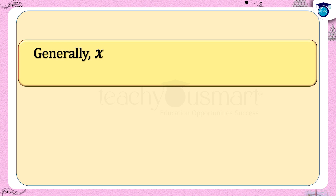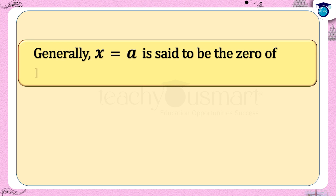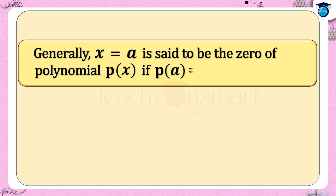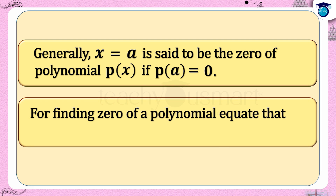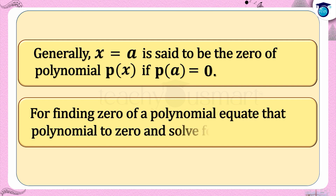Generally, x equals a is said to be the zero of the polynomial p(x) if p(a) equals 0. For finding the zero of a polynomial, equate that polynomial to zero and solve for the variable.